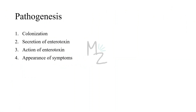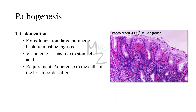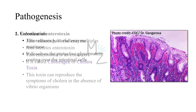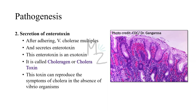Pathogenesis. It has four steps. The first is colonization and the second is secretion of enterotoxin — pathogenesis is dependent on these two. The third is action of enterotoxin and the last is appearance of symptoms. For colonization to occur, large numbers of bacteria must be ingested, as the organism is particularly sensitive to stomach acid. Adherence to cells of the brush border of the gut, which is required for colonization, is related to secretion of the bacterial enzyme mucinase, which cuts through the protective glycoprotein coating over intestinal cells.